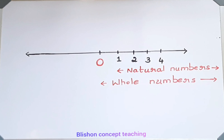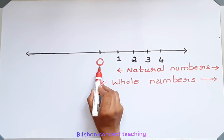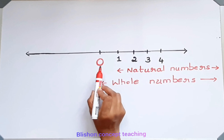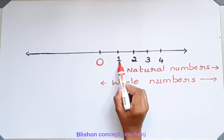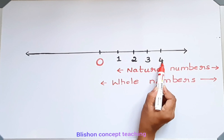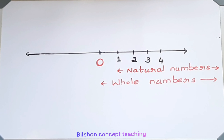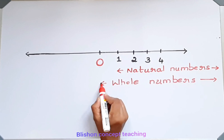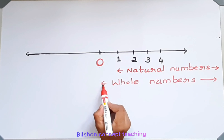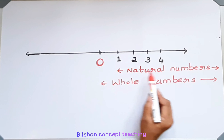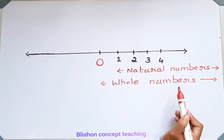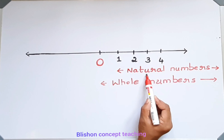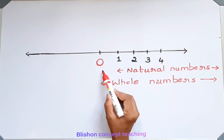Here, one thing you have to remember: zero is not a natural number. But all the natural numbers are whole numbers. The arrow mark only says that from zero, including all the natural numbers, it will make whole numbers. But in natural numbers, zero is not included.